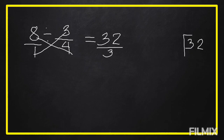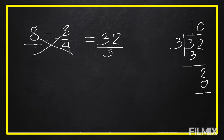Divide thirty-two by three: three goes into three once. One times three is three. Three minus three is zero. Bring down two — two divided by three is zero. Zero times three is zero. Two minus zero is two. The remainder two is our numerator and three is our denominator. So thirty-two over three equals ten and two-thirds. This is our final answer.